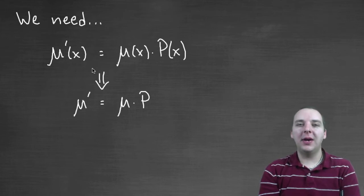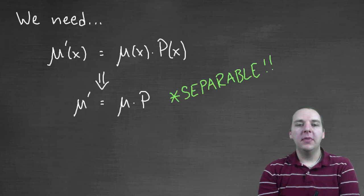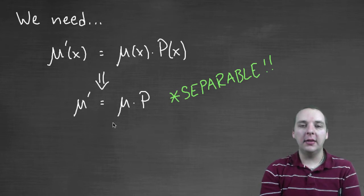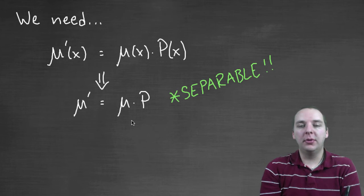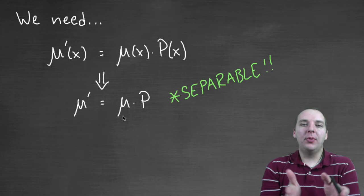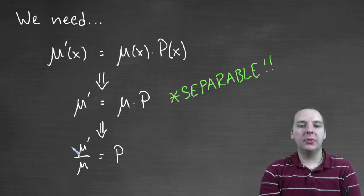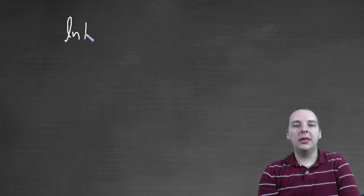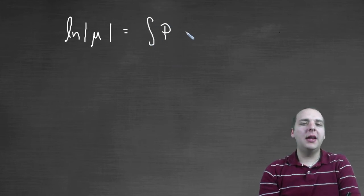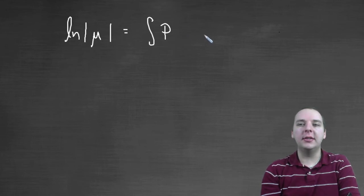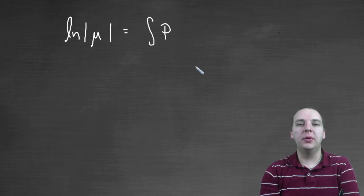Let's simplify by dropping the x's temporarily and writing mu prime equals mu times p. Notice this is a differential equation in its own right — and furthermore, it's separable. We separate the variables and integrate both sides. Moving mu prime over mu to the left gives us mu prime over mu equals p. Integrating both sides, the left side becomes the natural log of the absolute value of mu, and that equals the integral of p. We'll let the constant of integration be zero for now.